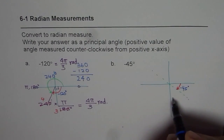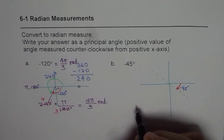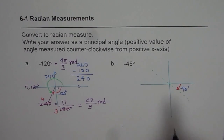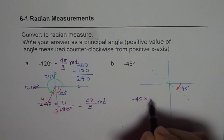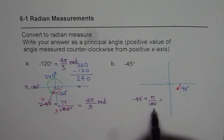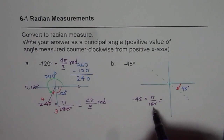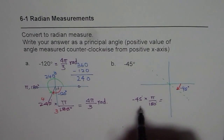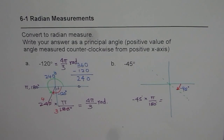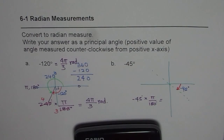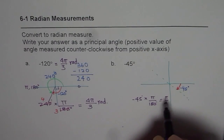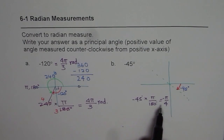We can convert using the same conversion factor: minus 45 degrees × π ÷ 180 degrees. Both 45 and 180 can be divided — 180 divided by 45 equals 4. So we get minus π/4. But remember, the question asks us to write the answer as a positive principal angle.